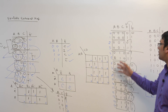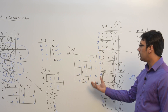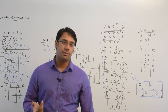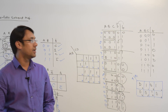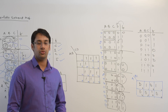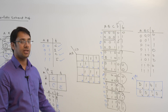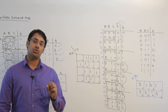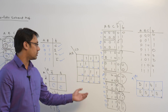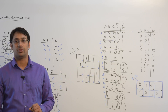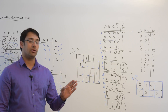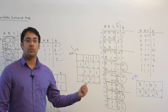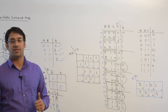The reason Variable Entrant Maps are important is that if you have a bigger function — for example, if you want to make a K-map of 5 or 6 variables — it becomes very difficult. A 5-variable K-map contains 32 cells and a 6-variable K-map contains 64 cells. With so many cells it is very difficult to draw and identify the subcubes. A better approach is to convert a 5-variable K-map to a 4-variable K-map using the Variable Entrant Map, then solve it to get the minimized equation.